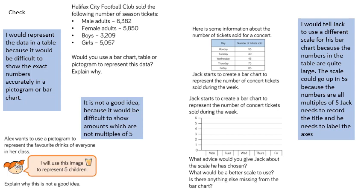Let's go through the answers. For Halifax City Football Club, I would represent the data on a table because it would be difficult to show the exact numbers accurately on a pictogram or a bar chart. For each group of people you have four-digit numbers, and these would be accurately represented on a table. For Alex's pictogram, it is not a good idea because it would be difficult to show amounts which are not multiples of five.